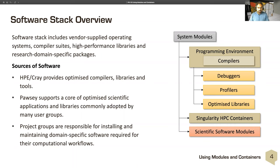Palsy supports a core of optimized scientific applications and libraries commonly used by our research groups. Research groups and project groups are responsible for installing and maintaining any domain-specific software required for their computational workflows that is not covered by the more commonly used ones provided by Palsy. Looking at the flowchart, the system modules have programming environments as the basis, providing compilers, debuggers, profilers, and optimized libraries. Sitting separate from that are Singularity HPC containers and some scientific software modules.